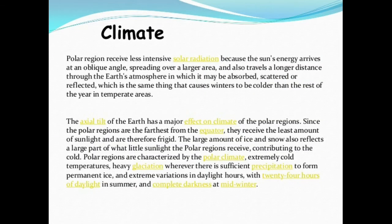Now we will study about climate. Both the freezer zones receive very little sunlight — yahan par bahut kam sunlight parti hai. In winters, the temperature drops down to minus 40 degrees Celsius. The temperature is always below the freezing point, accompanied by chilled cold winds called blizzards.